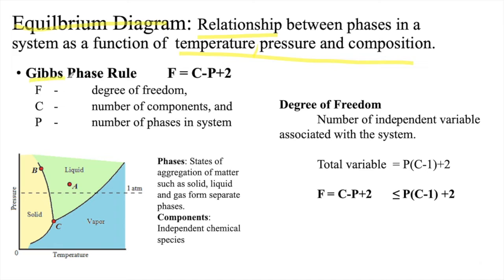What is Gibbs phase rule? F is the degree of freedom, C is the number of components, and P is the number of phases in a system. The Gibbs phase rule is given as F